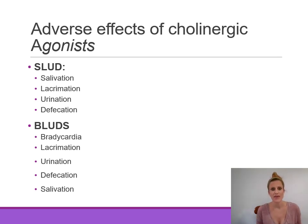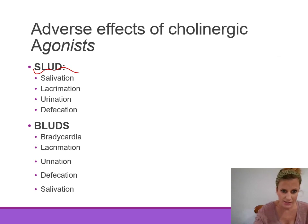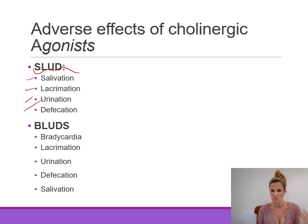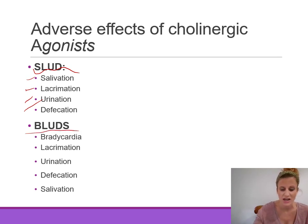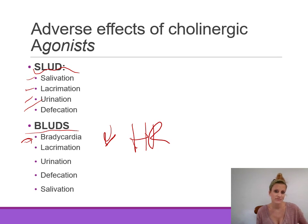A useful way to remember the adverse effects of cholinergic agonists is SLUDS — an exaggeration of the parasympathetic nervous system response. SLUDS stands for salivation, lacrimation, urination, defecation, and sweating — the wet stuff. An expanded version, DUMBELS or SLUDGE, adds bradycardia and bronchoconstriction: bradycardia — decreased heart rate leading to decreased cardiac output and blood pressure — bronchoconstriction, lacrimation, urination, defecation, and salivation.